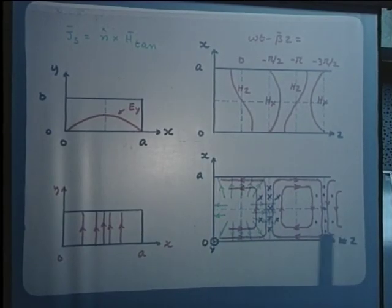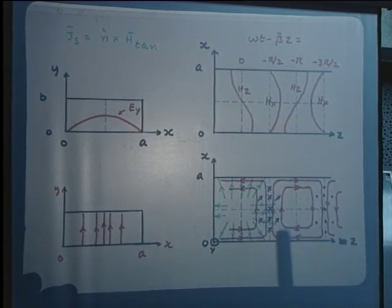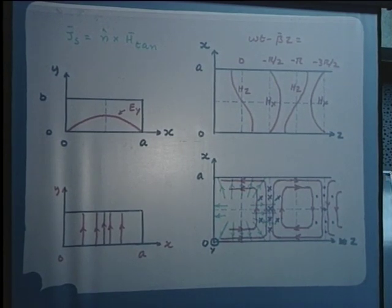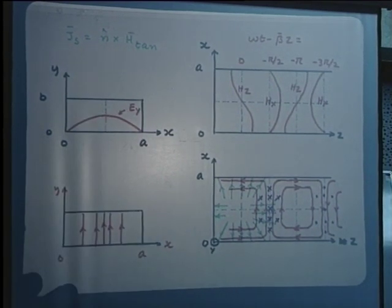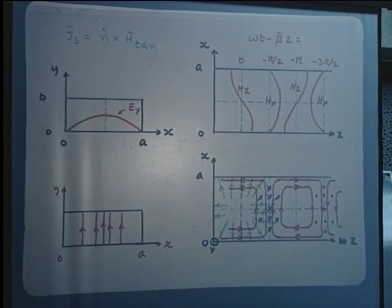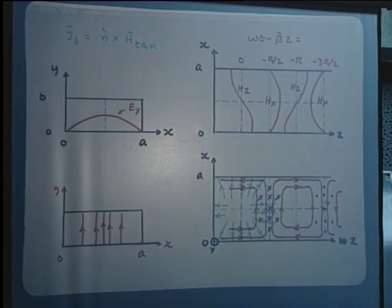Similarly, a slot on the broad wall where current lines are disturbed will cause leakage, perhaps to a lesser extent. But if we make the slot right in the middle of the broad wall where the current lines are entirely z-directed and have no x-component, the current lines will be least disturbed. Even though we make a slot for probing, the signal will not leak out as long as the slot is fairly narrow. That is why in slotted waveguides — used for measuring the voltage standing wave ratio — the slot is made at the middle of the broad wall. Since both broad walls are completely symmetric, either broad wall may be used.